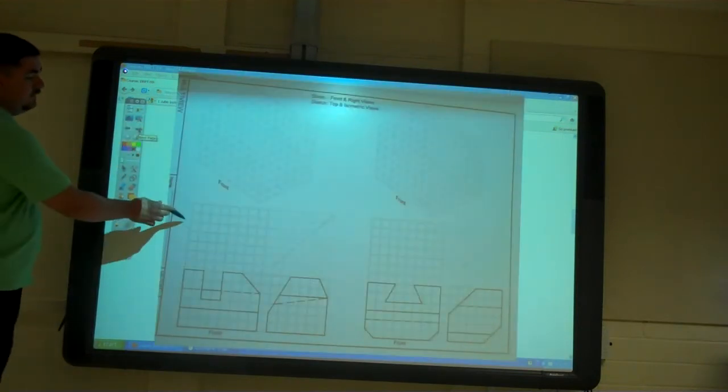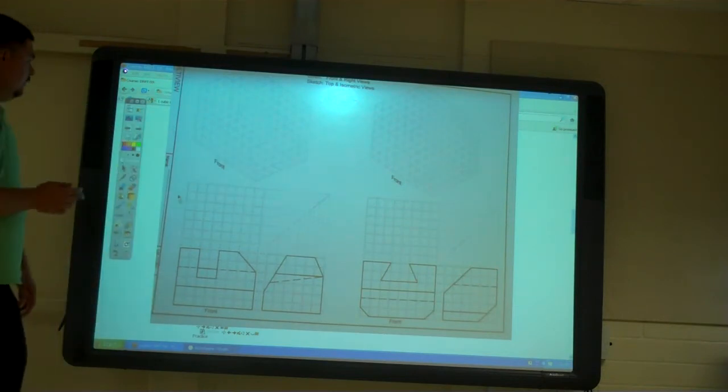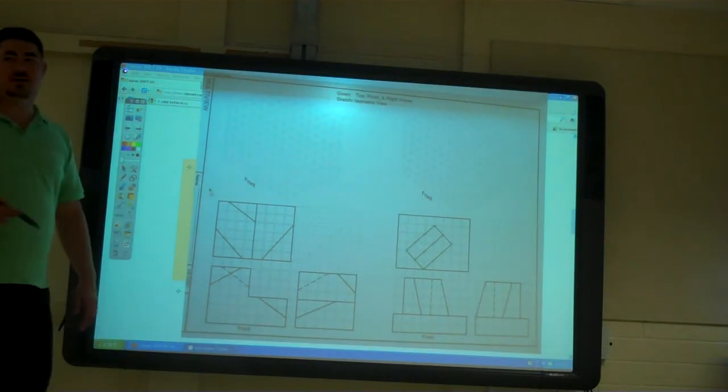This is 2A. They're missing the top view, and then you have to do the isometric. And then O, you've got all three views, but all you have to do is isometric.